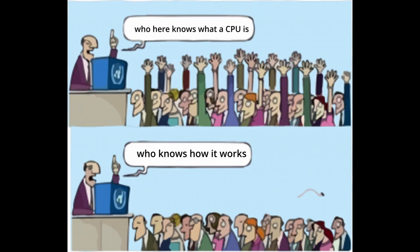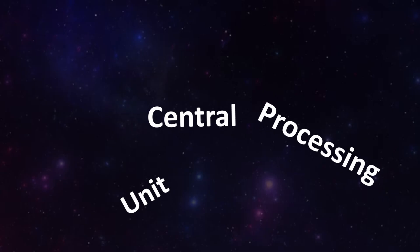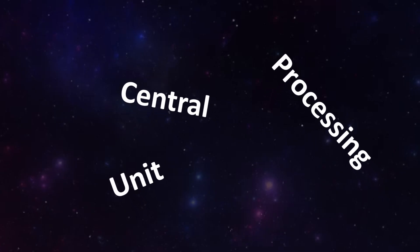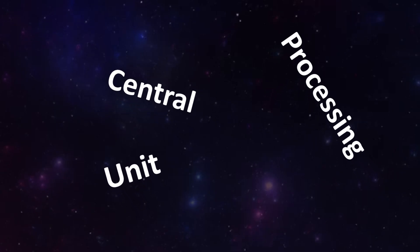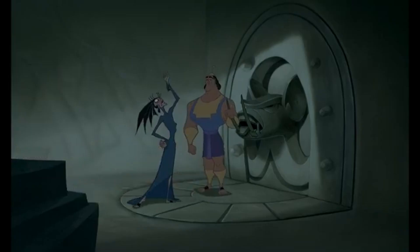CPUs — most everyone knows what they are, but many people have a hard time imagining how they work. CPU stands for Central Processing Unit, and is where the bulk of computer operations happen. From a high level, CPUs have two main components: the Arithmetic Logic Unit, or ALU, and the Control Unit.